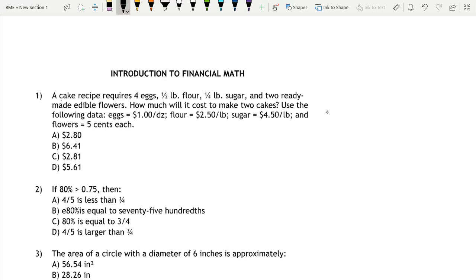Anyways, over here we have a cake recipe. It requires four eggs, half pound flour, half pound sugar, and two ready-made edible flowers. How much will it cost to make two cakes? Use the following data: eggs equals $1.00 per dozen, flour is $2.50 per pound, sugar is $4.50 per pound, and flowers are five cents each.